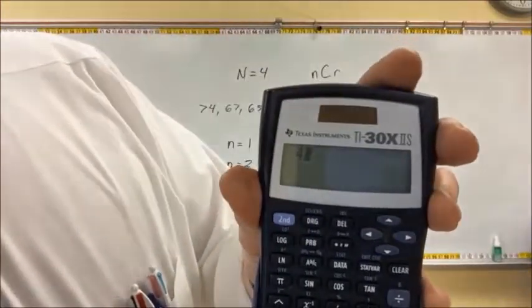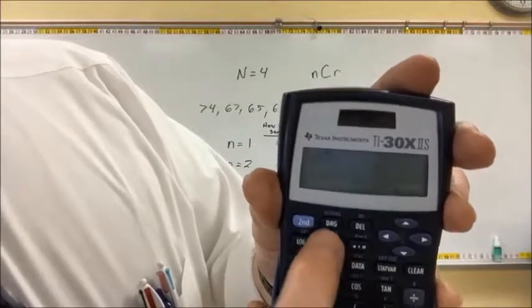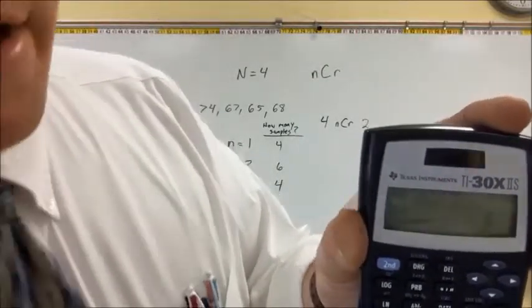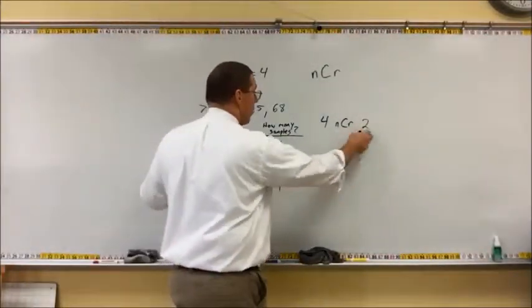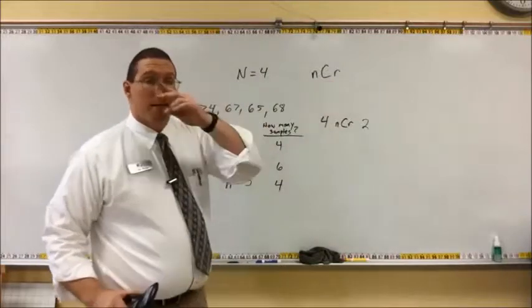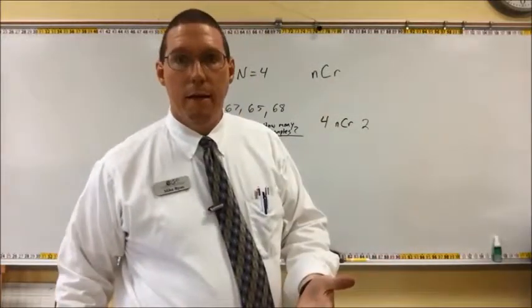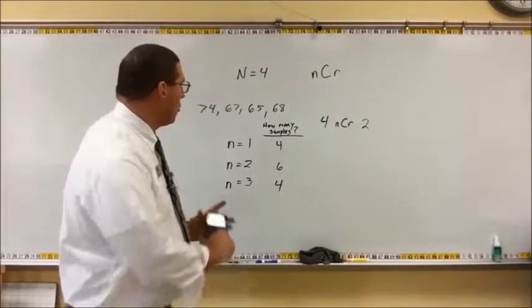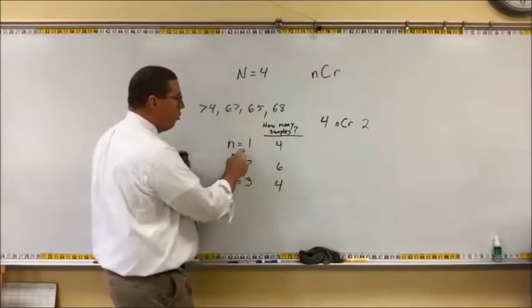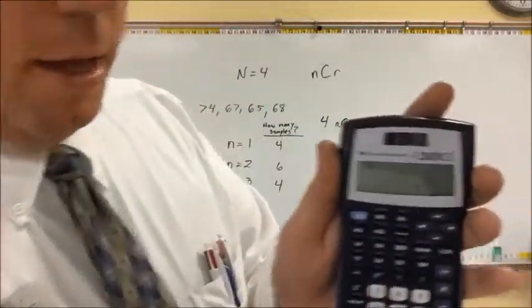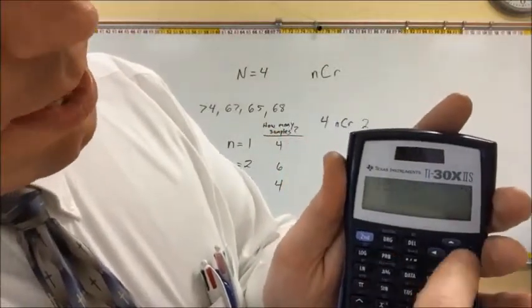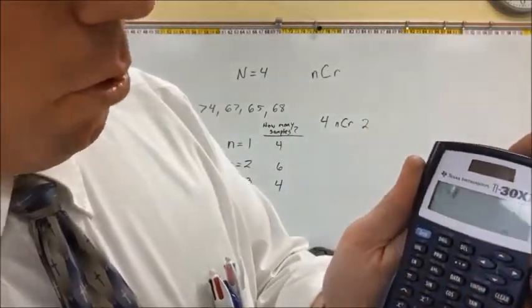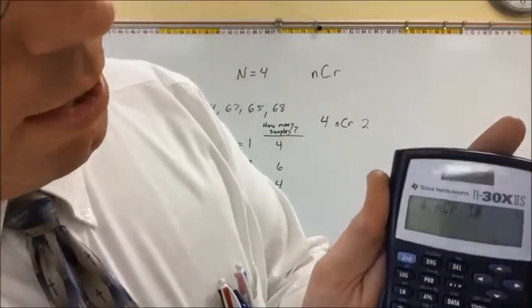Let's verify the other results. For a sample size of 1: 4 nCr 1 equals 4. For a sample size of 3: 4 nCr 3, enter, and the answer is 4. So using this combination feature on your calculator tells you how many possible samples you can get given a population and a particular sample size.